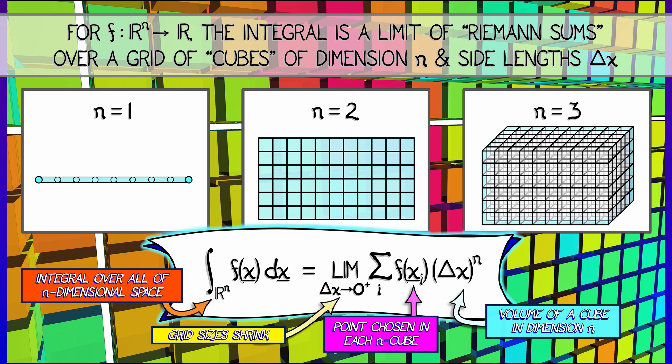add up all those cubes, and then take the limit of these sums as delta x goes to 0, as this grid size shrinks and we get a finer and finer mesh. That is the definition of the integral in terms of a Riemann sum.